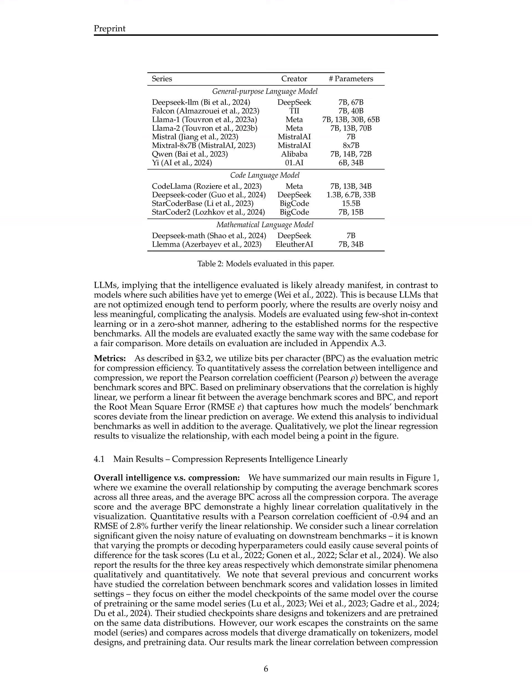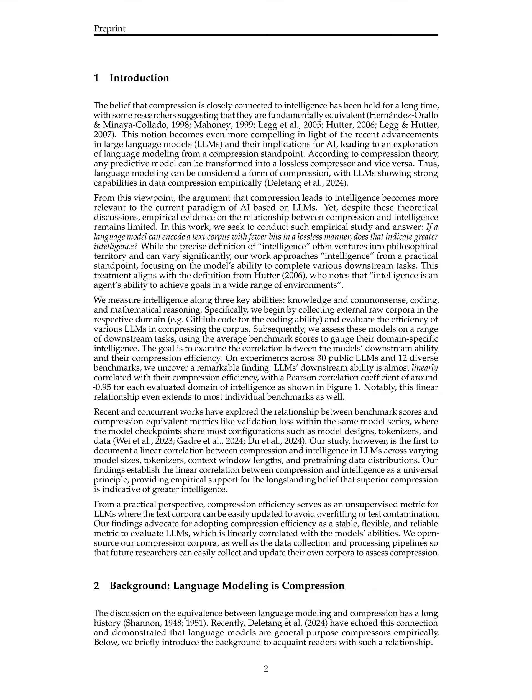The correlation between compression efficiency and intelligence is evaluated using the Pearson correlation coefficient and root mean square error (RMSE). The study focuses on well-trained base models to ensure that the evaluated intelligence is already manifest. The linear correlation between compression efficiency and intelligence is established as a universal principle, providing empirical support for the belief that superior compression indicates greater intelligence in LLMs.